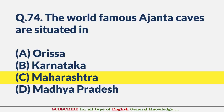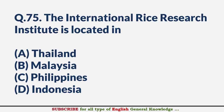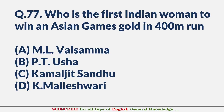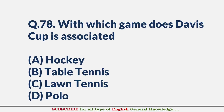The International Rice Research Institute is located in — Answer C: Philippines. The famous Dilwara Temples are situated in — Answer A: Rajasthan. Who is the first Indian woman to win an Asian Games gold in a 400-meter run? — Answer B: P.T. Usha. With which game is the Davis Cup associated? — Answer C: Lawn Tennis.